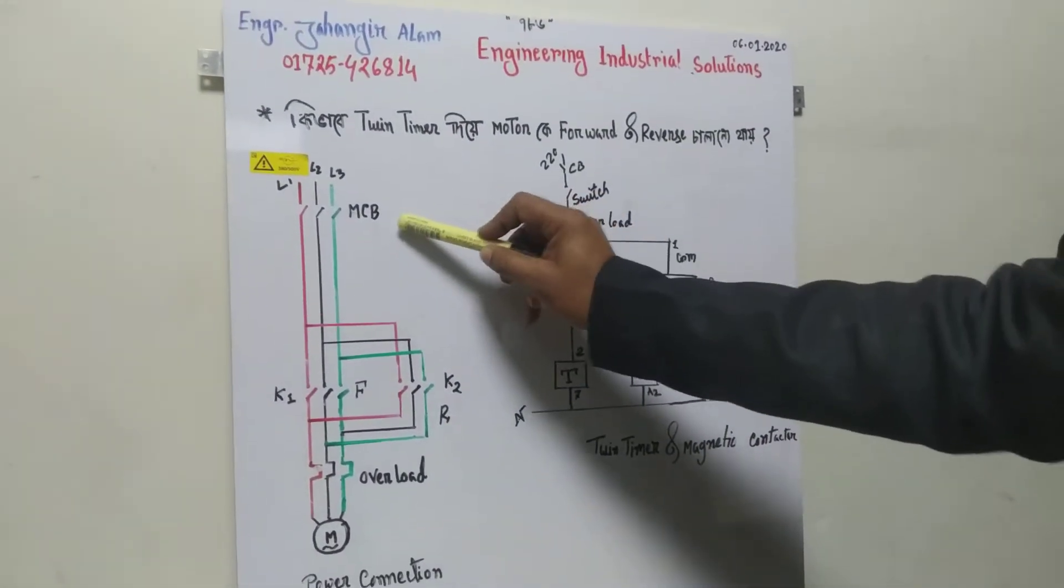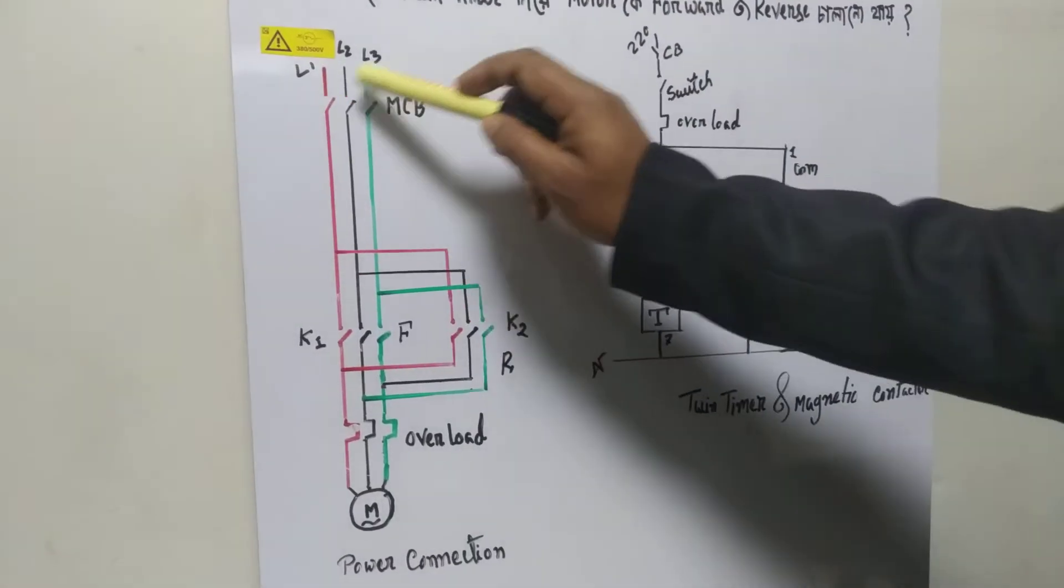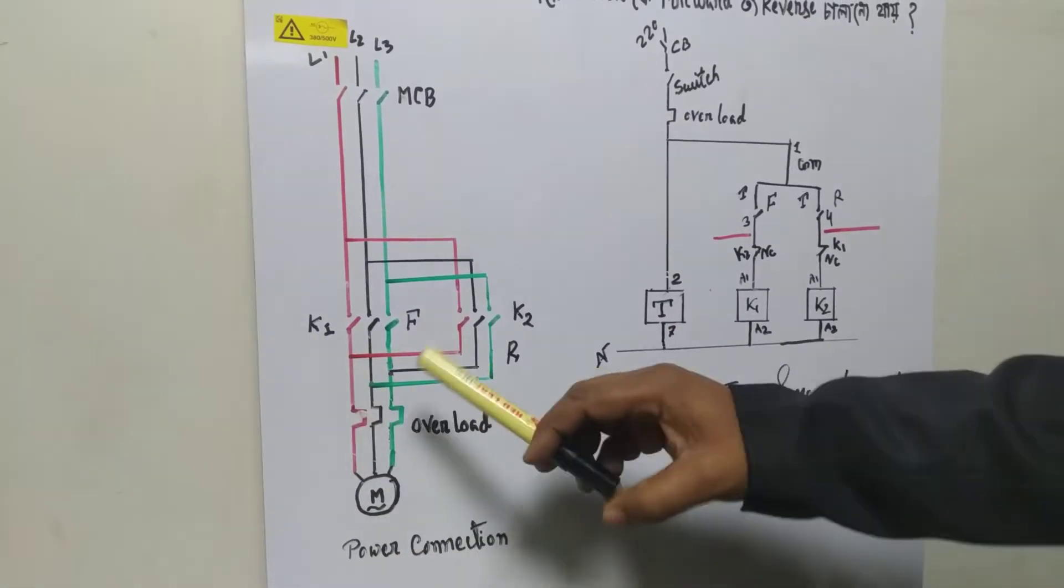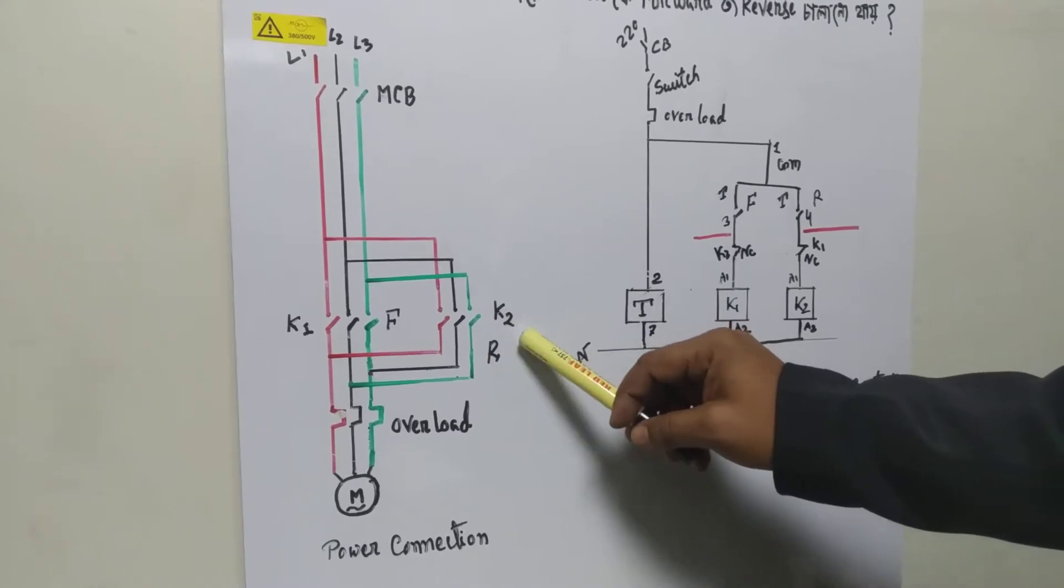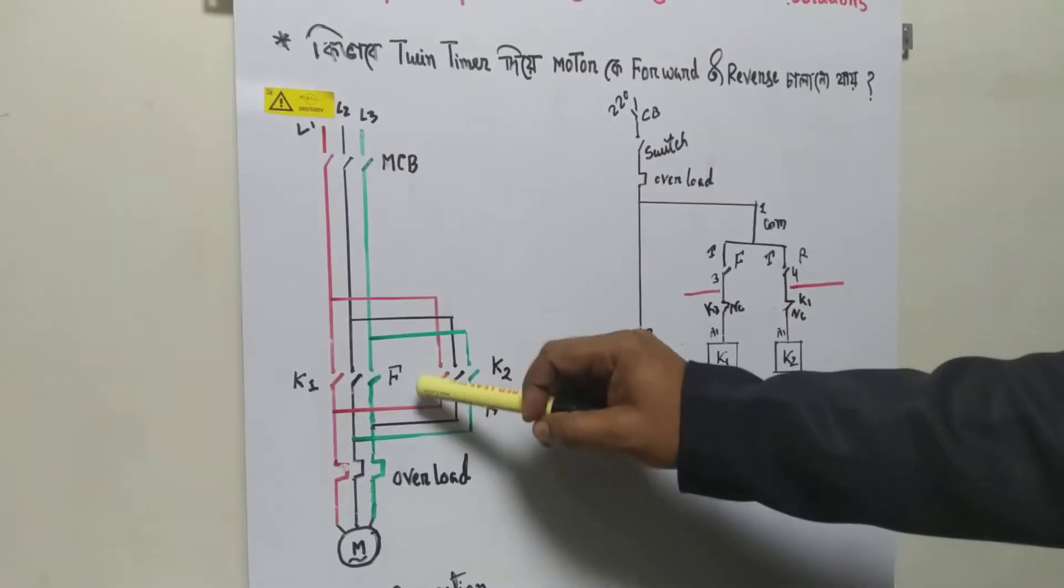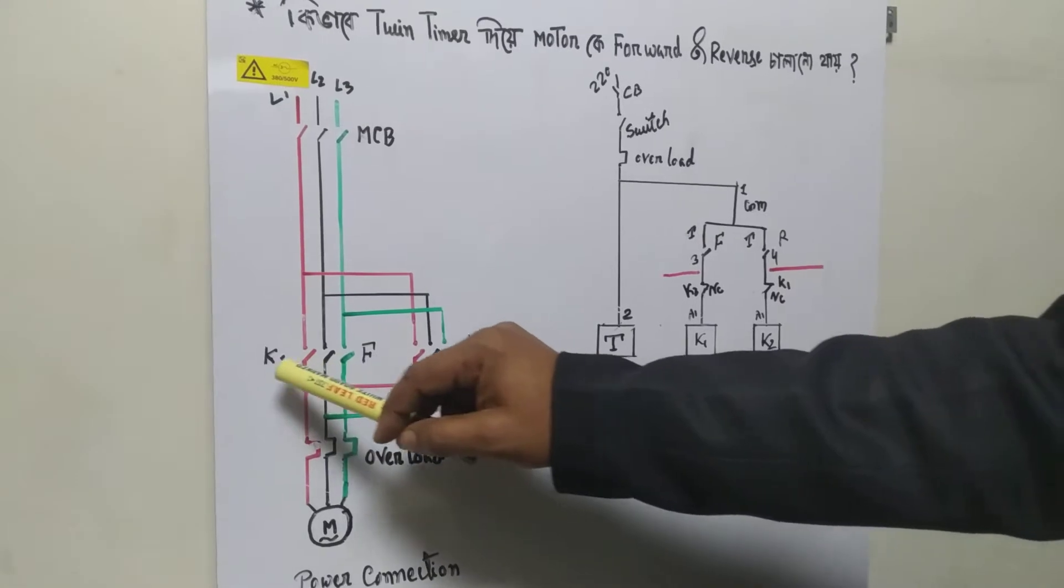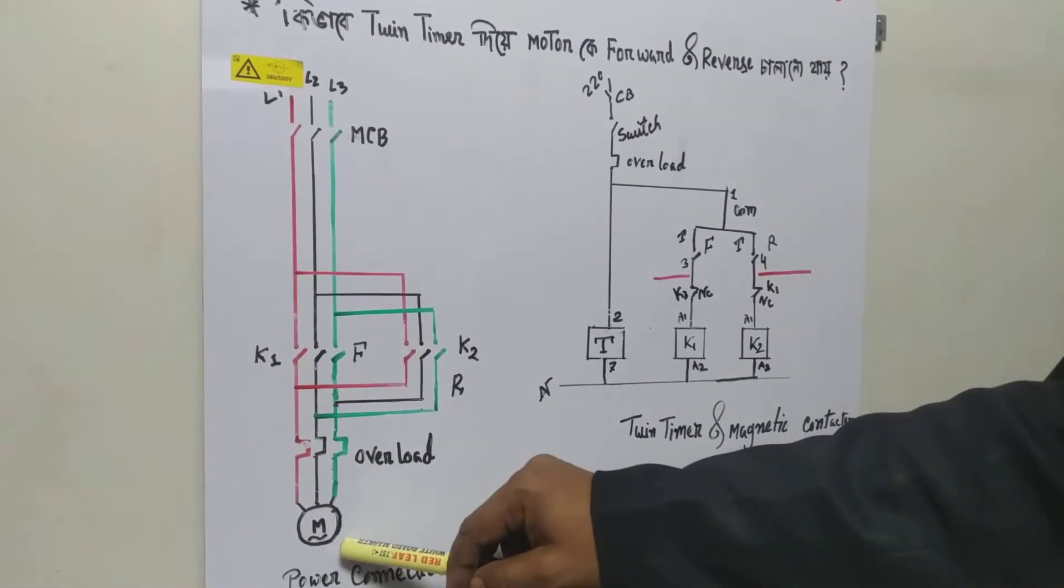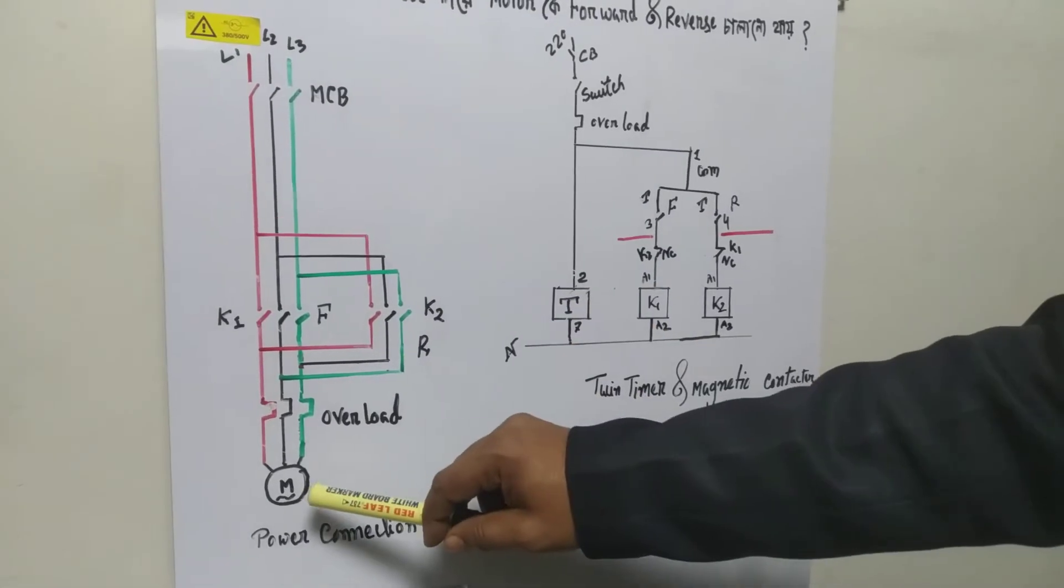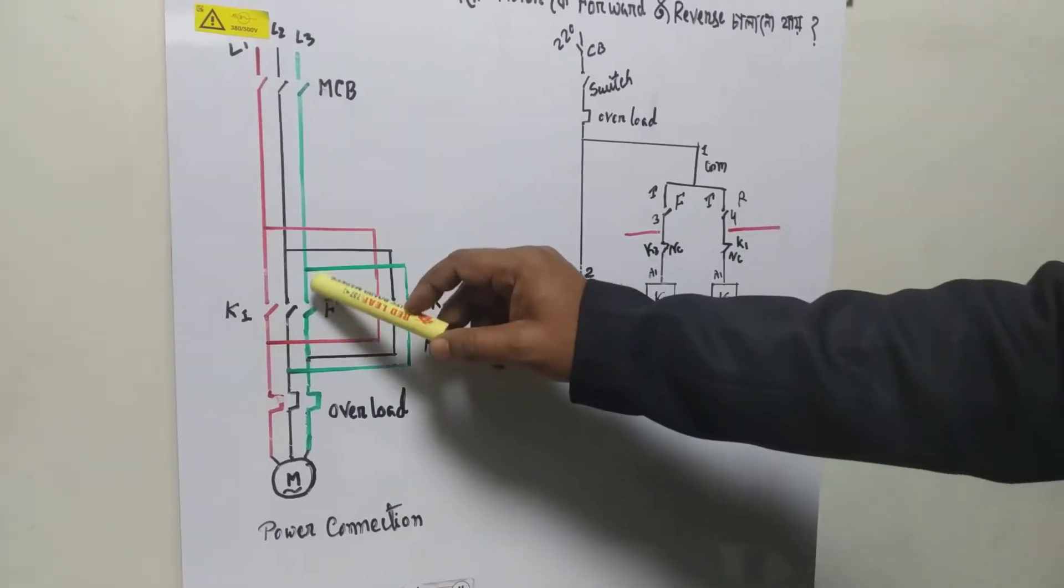First, let's look at the power connection input line. We have L1, L2, L3 connected to the magnetic contactor for forward and reverse. There's also an overload protection and the motor. When K1 magnetic contactor activates, the motor runs forward. When K2 activates, the motor runs in reverse.